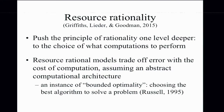We're making models that explicitly think about the trade-off between errors we make in solving problems and the cost of computation — assuming some abstract underlying computational architecture. This is an instance of Stuart Russell's framework of bounded optimality: rather than thinking about abstract agents without computational constraints, we think about real agents with real computational architectures, selecting the best algorithm to solve a problem.